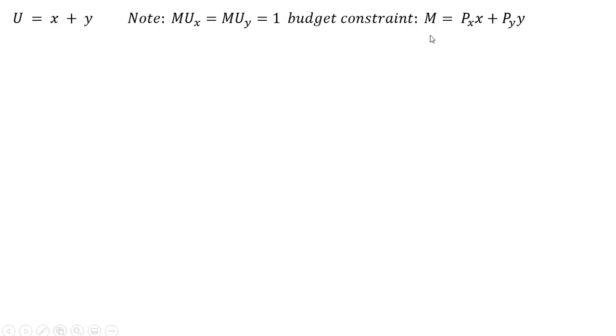The budget constraint here for the consumer: m is money income, and it equals the price of good x times units of good x plus the price of good y times units of good y.